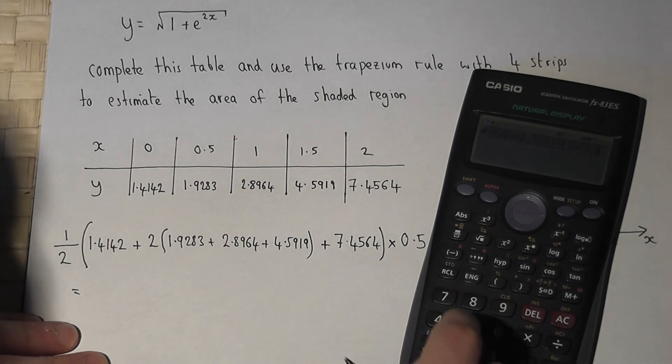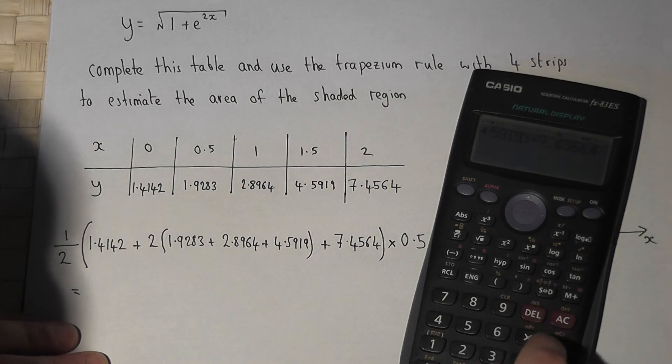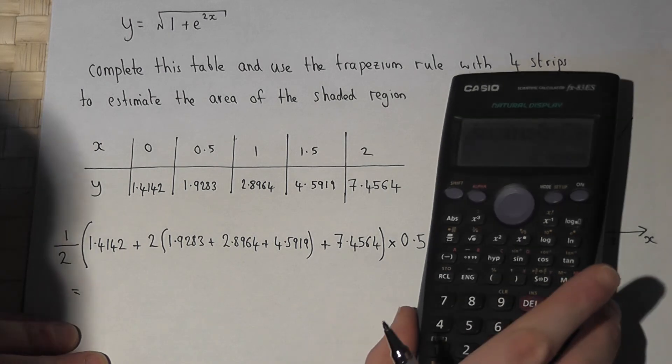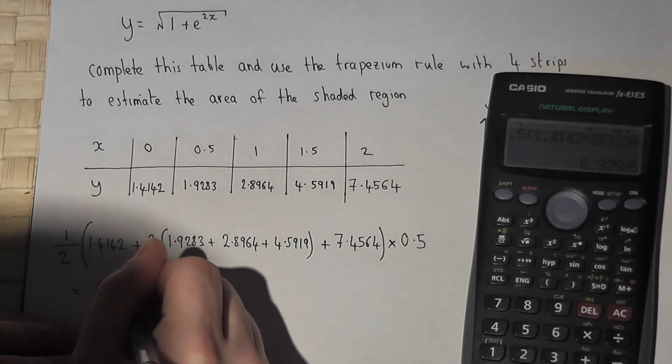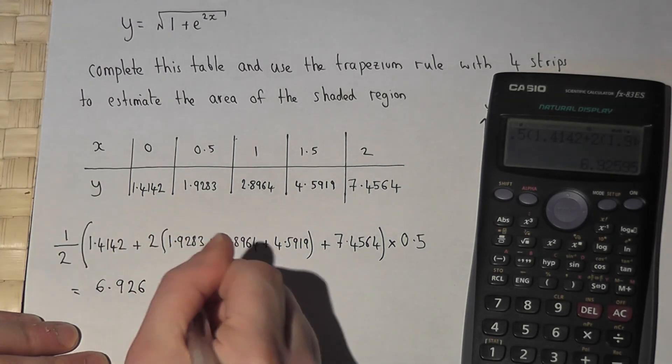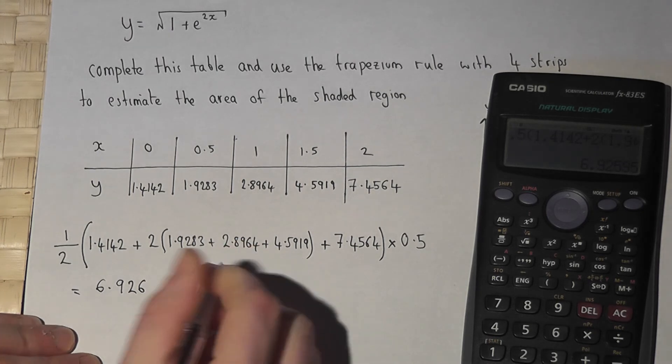Press enter and we get 6.926 to 4 significant figures.